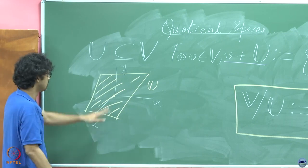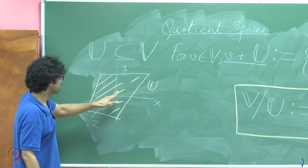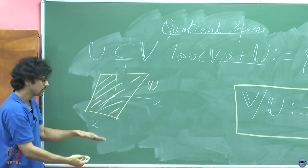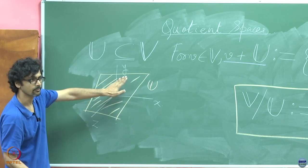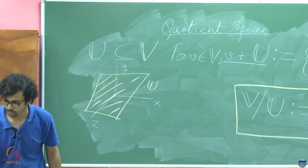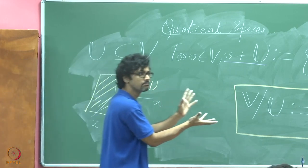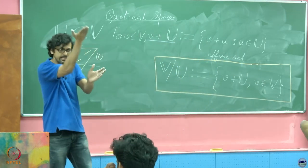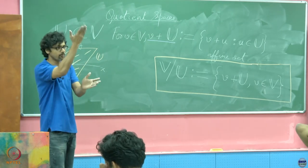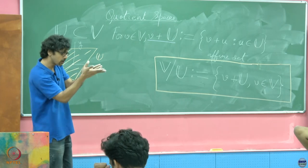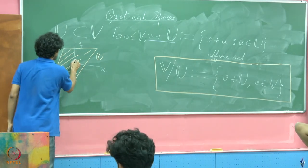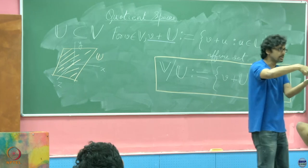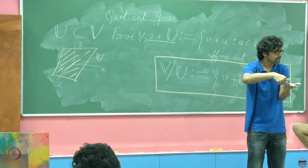Now if this is the object that you are interested in, then what I have just described in the previous line is just a member of this. See the overall object is this, it is a notation, that is why it is called a quotient, it is a factor. It is V quotiented by U, where U is a subspace of V. If you take one particular parallel translate or affine set or sometimes also called coset, that is just this object.